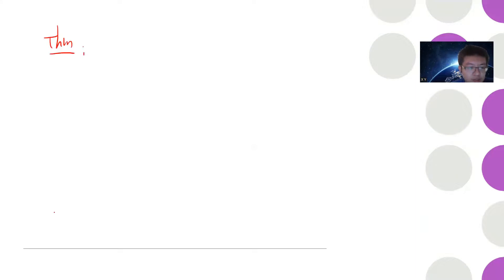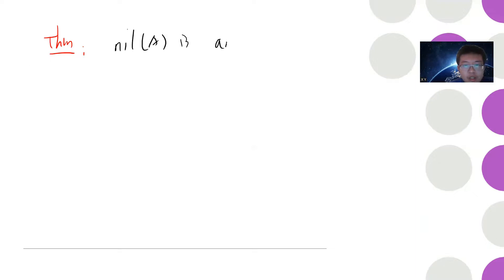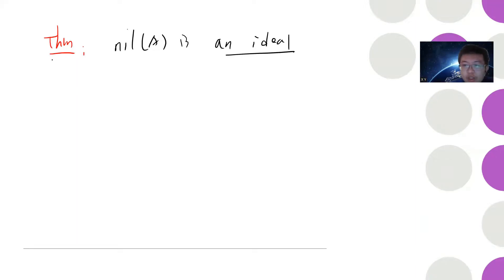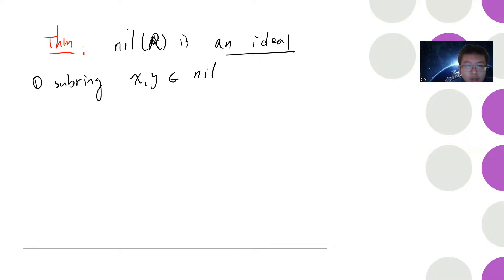The important fact — which is actually a theorem — is that nil(R) is an ideal. In order to prove it's an ideal, we first need to prove it's a subring. So let's check the subring conditions. Take x, y belonging to nil(R).